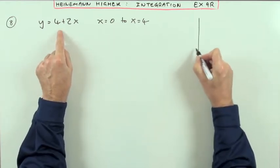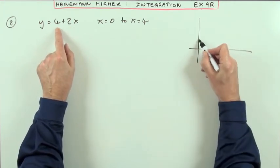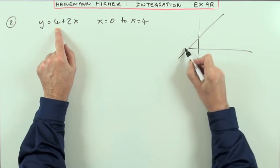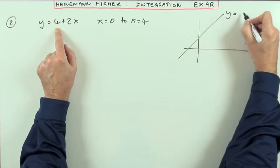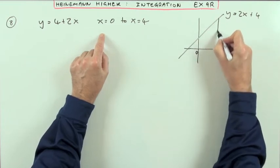Well, what does this look like? y equals 2x plus 4 cuts at 4 with a gradient of 2, so I'll just put it approximately looking like that. So there's the line y equals 2x plus 4, from x equals 0 to x equals 4.